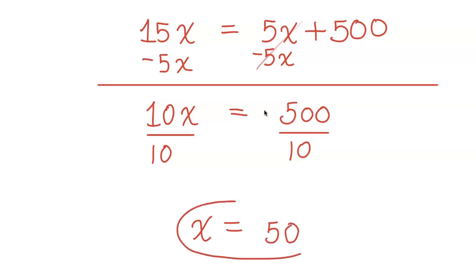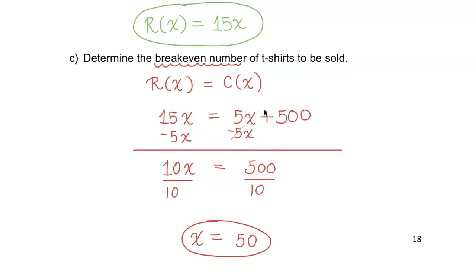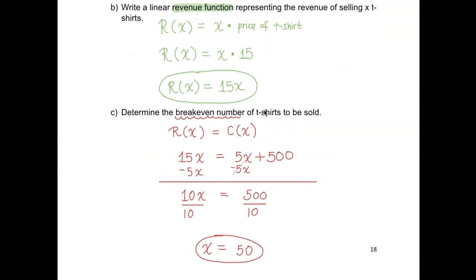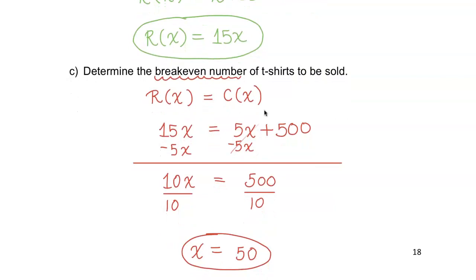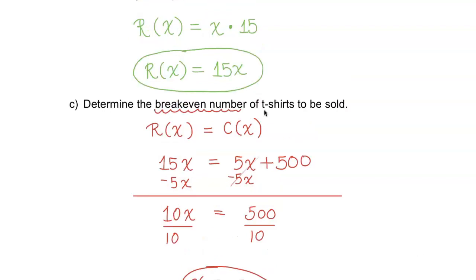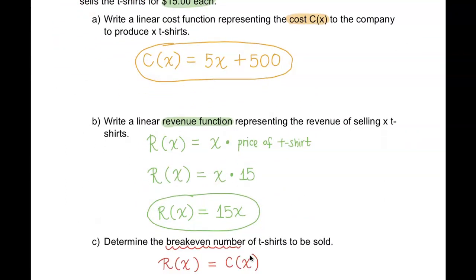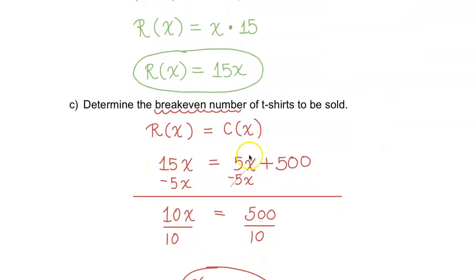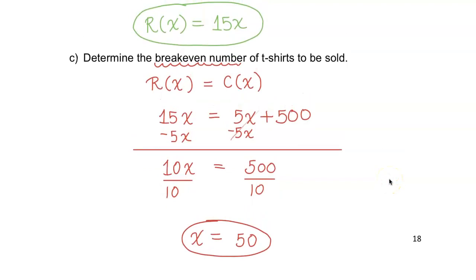So they have to sell 50 t-shirts for their cost to equal the revenue. If they want to make some profit, they better sell more than 50 t-shirts. When you move up to Math 261 Applied Calculus, you guys will be doing a lot of profit, revenue, and cost functions. For this problem, we set up the cost function and revenue function, and to find the breakeven number, set those two functions equal to each other and solve for x. They need to sell 50 t-shirts to break even.